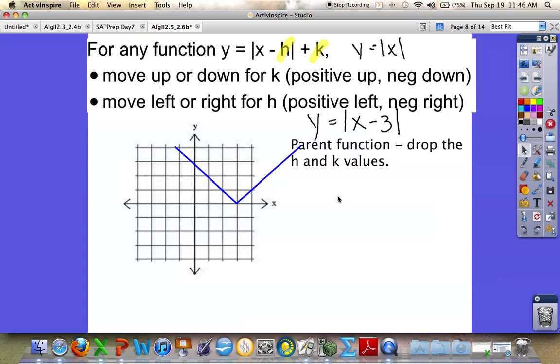And conversely, if I change this number to a positive 5, I would actually shift my graph back 5 units. So I would start back at the origin where the parent function is and move it 1, 2, 3, 4, 5 units back.